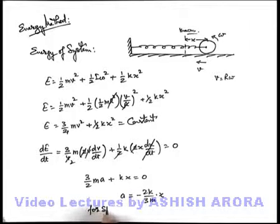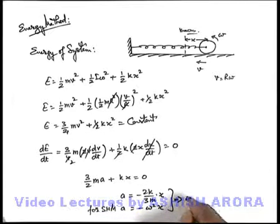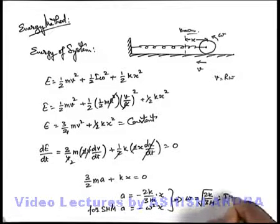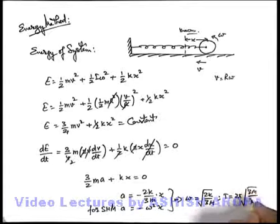And again for SHM we already know acceleration can be written as minus omega square x. And on comparing we get the value of omega as root of 2k by 3m, or its time period to be 2 pi by omega, it is 2 pi root of 3m by 2k. That will be the answer to this question.